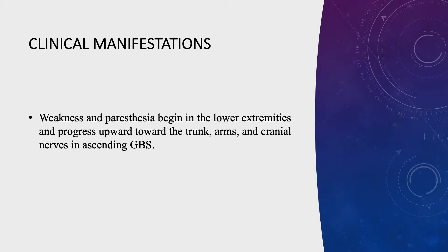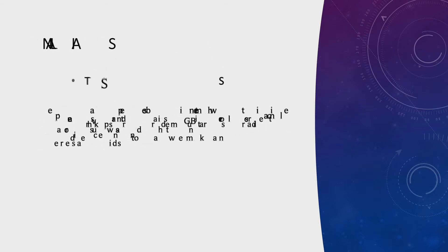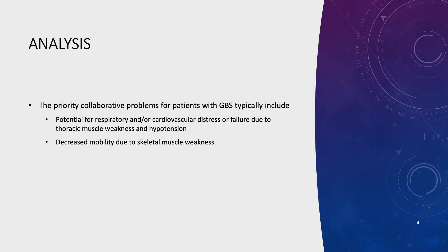Weakness and paresthesias begin in the lower extremities and progress upward toward the trunk, arms, and cranial nerves in ascending GBS. The priority collaborative problems for patients with GBS typically include potential for respiratory and/or cardiovascular distress or failure due to thoracic muscle weakness, hypotension, and decreased mobility due to skeletal muscle weakness.